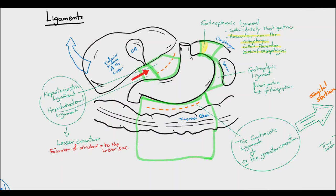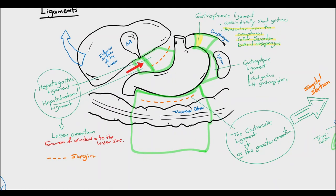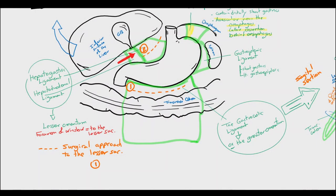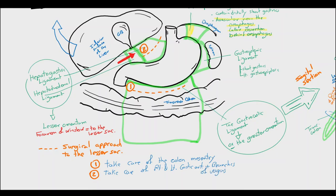Here we can see again the possible surgical approaches to the lesser sac. It is either by dissecting through the gastrocolic ligament or by dissecting through the lesser omentum. You must take care when dissecting through the gastrocolic ligament not to injure the colon mesentery, and when dissecting through the lesser omentum, not to injure the right or left gastric vessels or the branches of the vagus nerve.